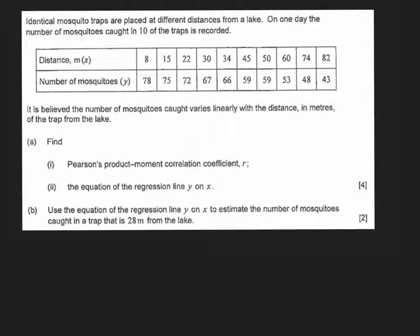So up here we've got the distance from the lake, and then here we've got the number of mosquitoes that are caught at the end of the experiment. We are told that he believes the number of mosquitoes caught varies linearly with the distance in meters of the trap from the lake.